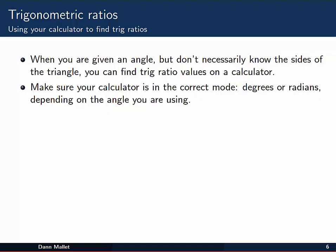You can also use your calculator to find the values of the trig ratios. When you're given an angle but you don't necessarily know the sides of the triangle, this can be quite useful. One thing to keep in mind though is to make sure that your calculator is in the correct mode. If you're talking about angles in degrees, you need to make sure your calculator is in degree measurement status. If you're looking at radian measure angles, you need to make sure that your calculator is in radian mode.